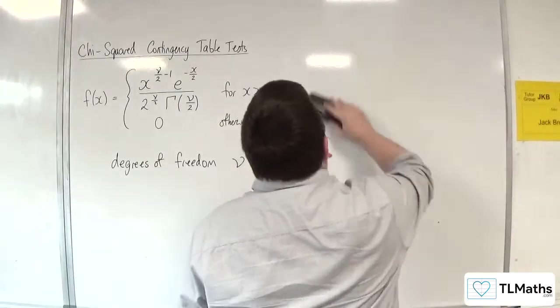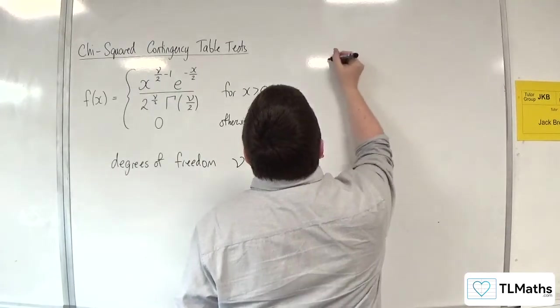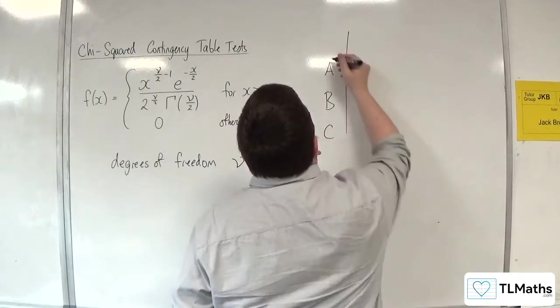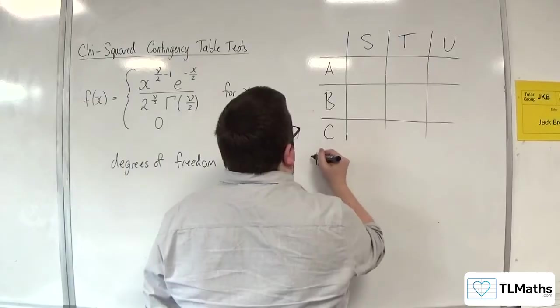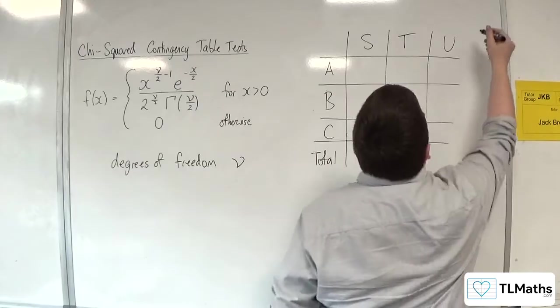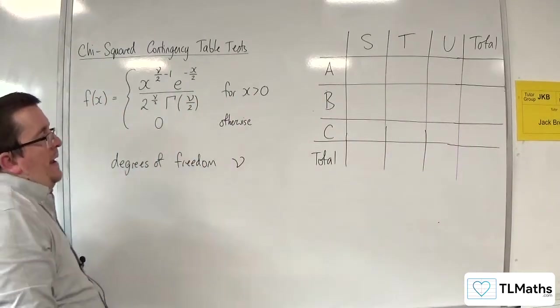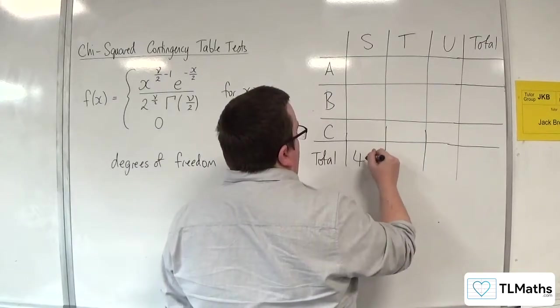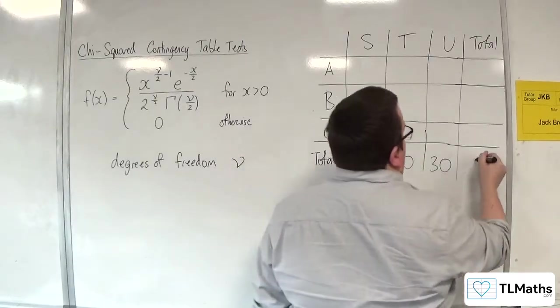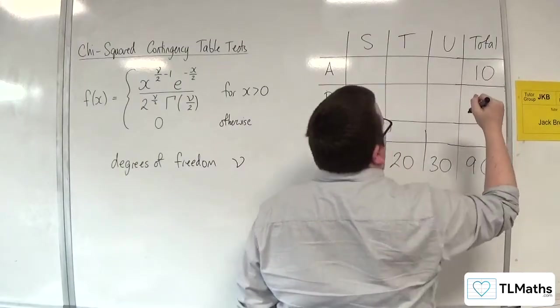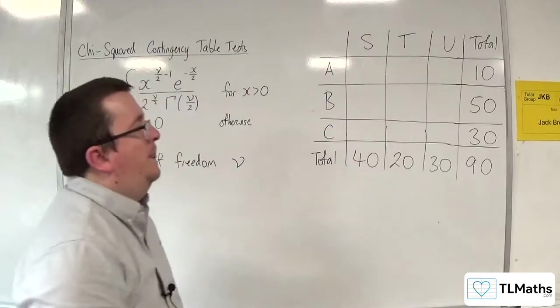Now, if we extend this, because we're going to be dealing with a table of values. Let's say it doesn't really need headers, but I'll just put in some A, B, C, S, T, U. And we're going to put in total. And total. So, let's say these add up to 40. These add up to 20. And these add up to 30. And it all adds up to 90, of course. These add up to 10. These add up to 50. And so, that limits my choice now. So, that's going to have to be 30.